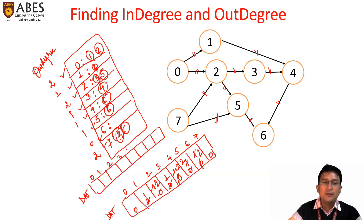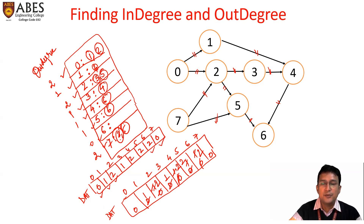After processing all adjacency lists, the direct address table gives: indegree of zero is zero, indegree of one is one, indegree of two is two, indegree of three is one, indegree of four is two, indegree of five is two, indegree of six is two, and indegree of seven is zero.